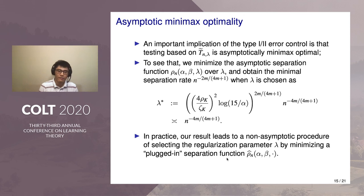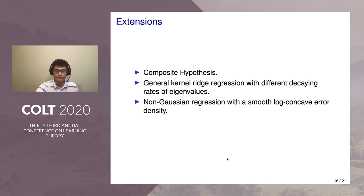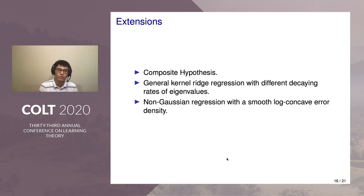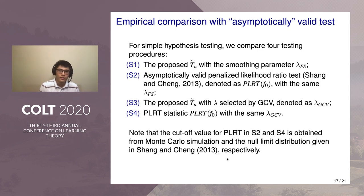As a byproduct, our result leads to a non-asymptotic procedure for selecting the regularization parameter lambda by empirically minimizing a plug-in version of the separation function. We also consider extensions from simple to composite hypothesis, from the smoothing spline estimate to the more general kernel regression estimate — where the minimax separation rate is determined by the decaying rate of eigenvalues of the corresponding kernel function — as well as extensions beyond regression such as classification. We also conducted simulation comparisons of our method with asymptotic-based approaches such as the penalized likelihood ratio test, and other tuning parameter selection methods such as generalized cross-validation.